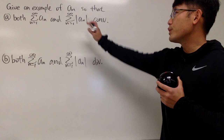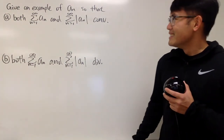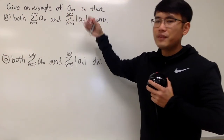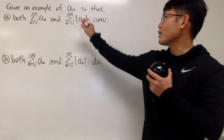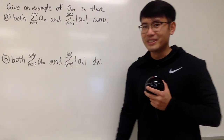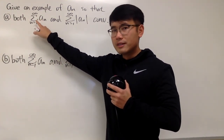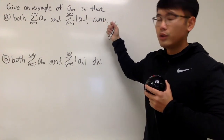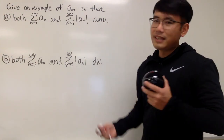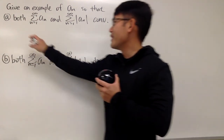We don't really have much condition on a_n, so you can do a lot of things. Sometimes you have to pay attention to whether the question asks for non-negative or non-decreasing for a_n, but here we have a lot of freedom. For the first part, I want both the series of a_n and the series of the absolute value of a_n to converge. It's not that bad at all — you can just pick the easy ones. Here is an example.